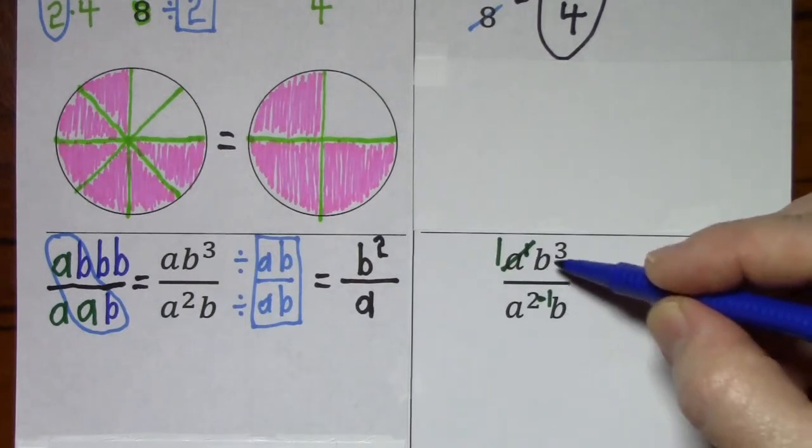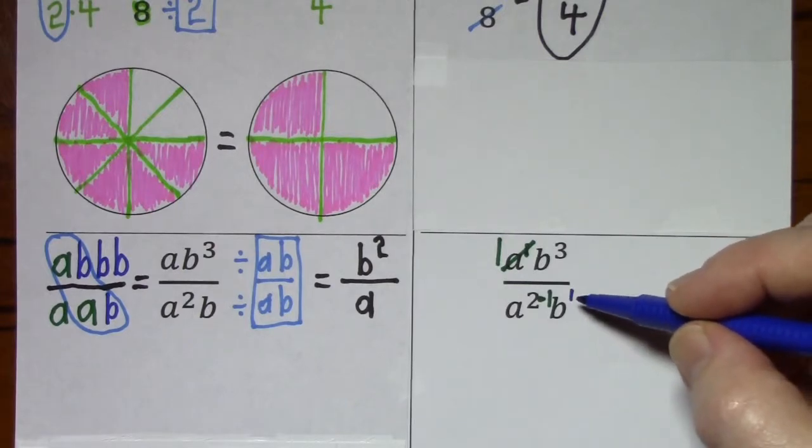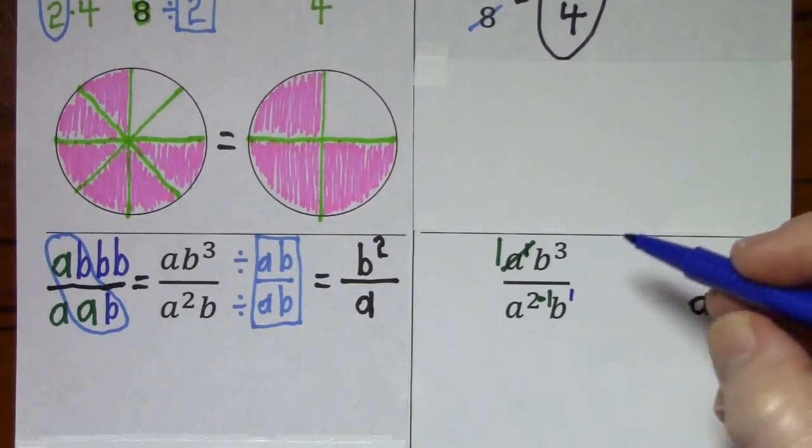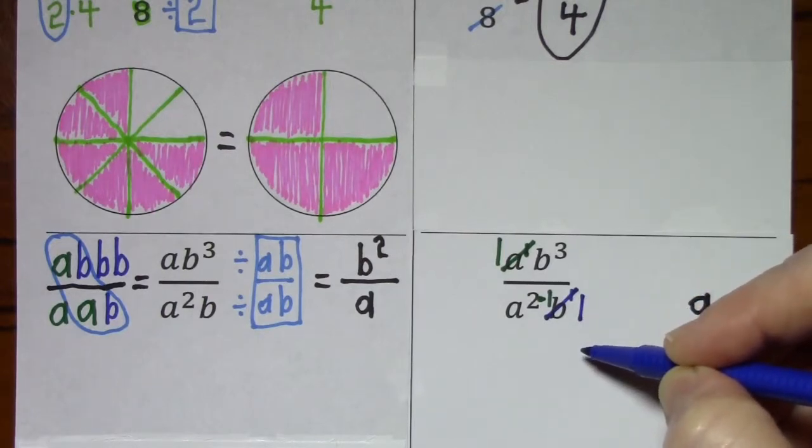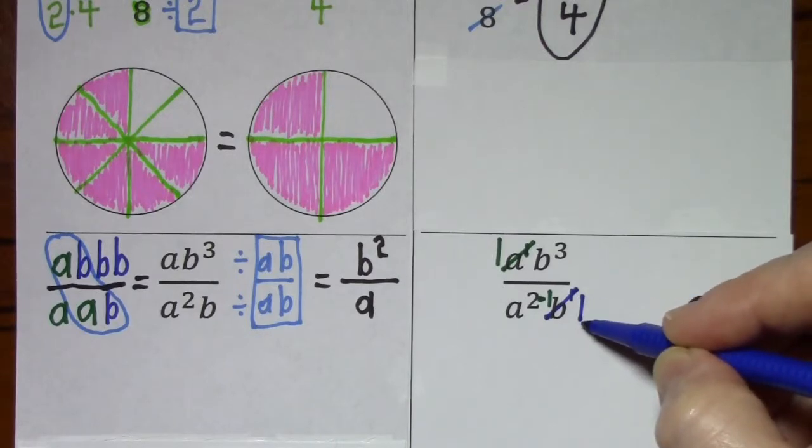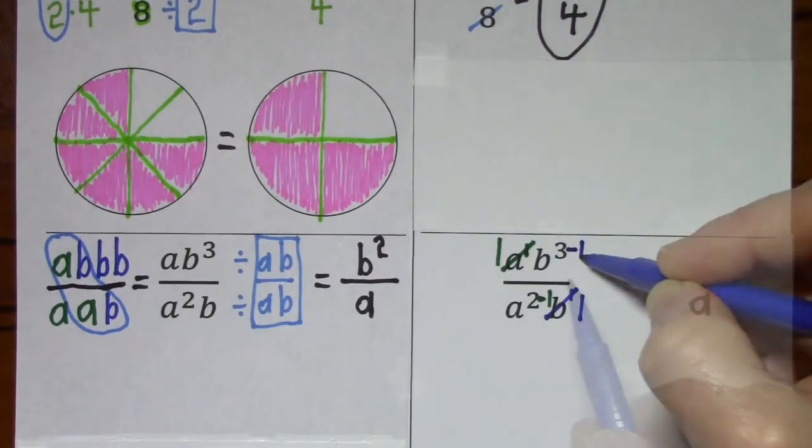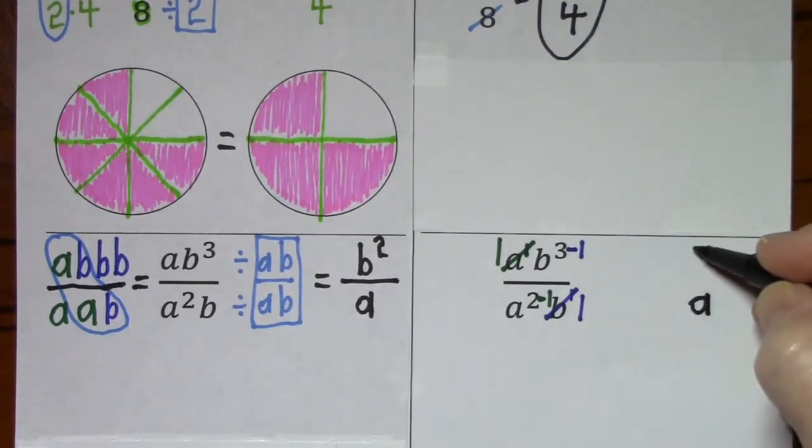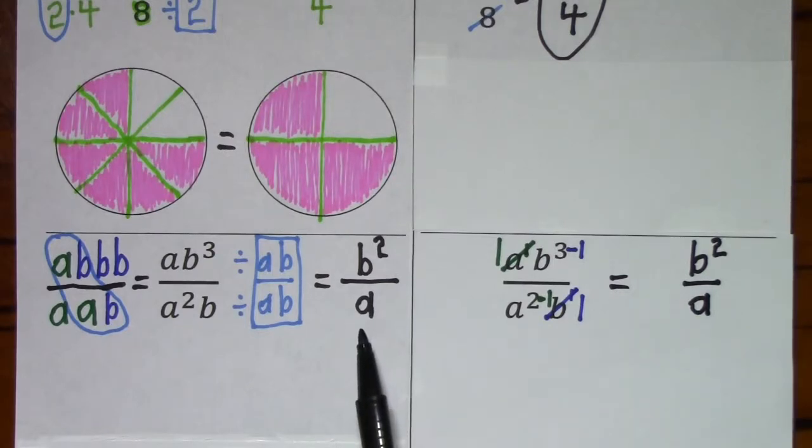Looking at the b's, the bases are the same. This is b to the first power. Using the rules for exponents, whichever exponent is smaller is the one that I'm going to get rid of. So I can cross this out. I get a 1. So instead of b to the first power, I have 1. So long as this exponent gets subtracted from this exponent. So b to the 3 minus 1 is b squared. And notice what we have here is the same as what we ended up with here.